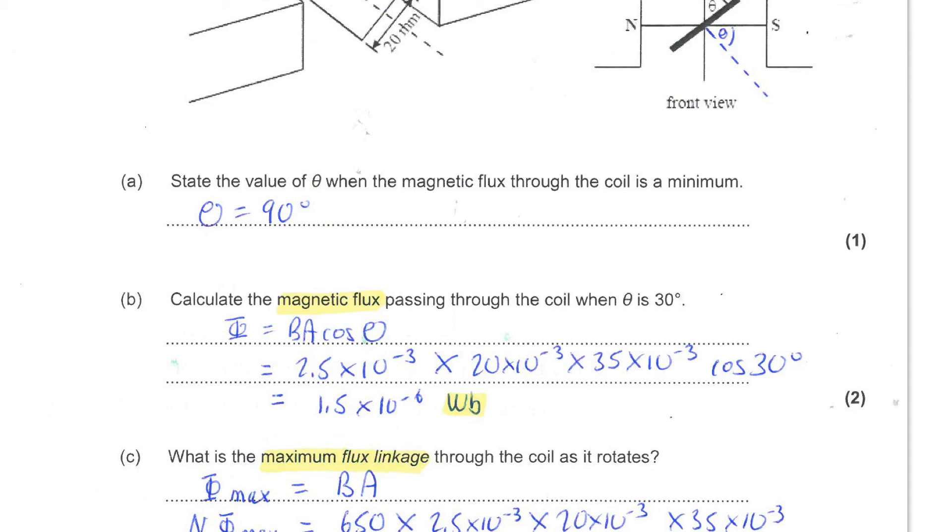So that means the maximum flux would be BA and the maximum flux linkage would be NBA as each turn of the coil links the flux. So we have 650 turns multiplied by the area and multiplied by the strength of the magnetic field or the flux density.